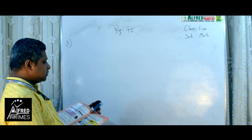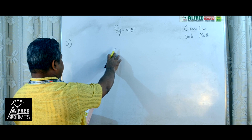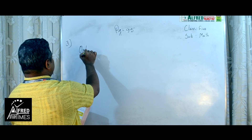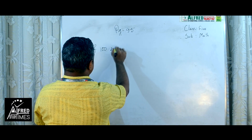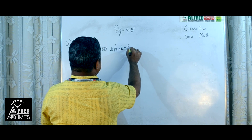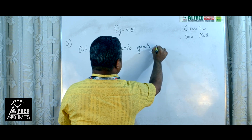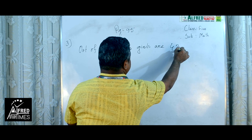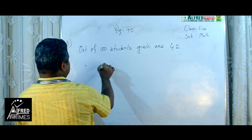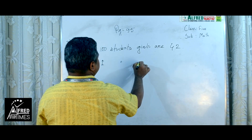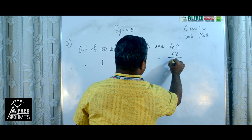Now we will solve this. 42% means out of 100 students, girls are 42. So out of 1 student, girls are 42 by 100.